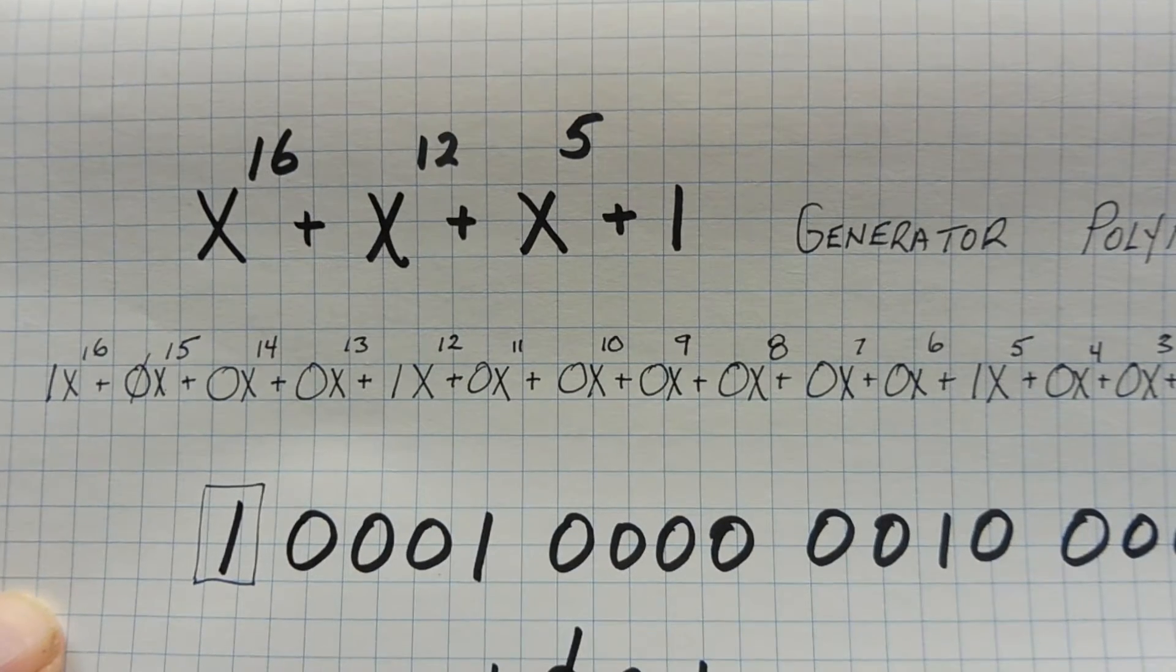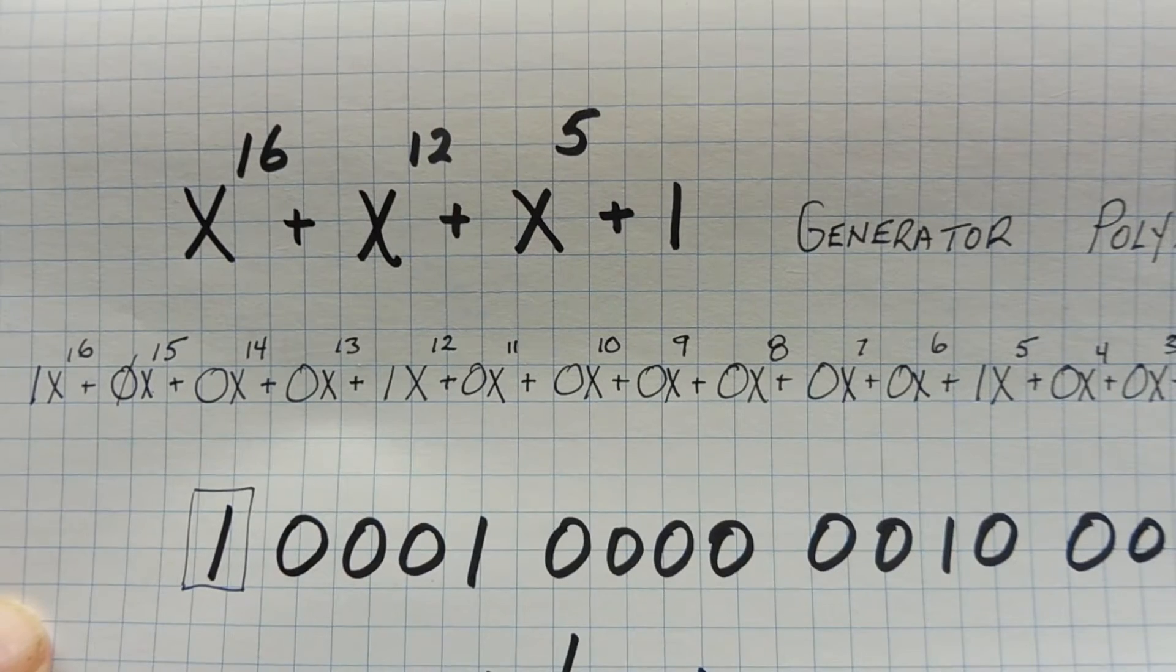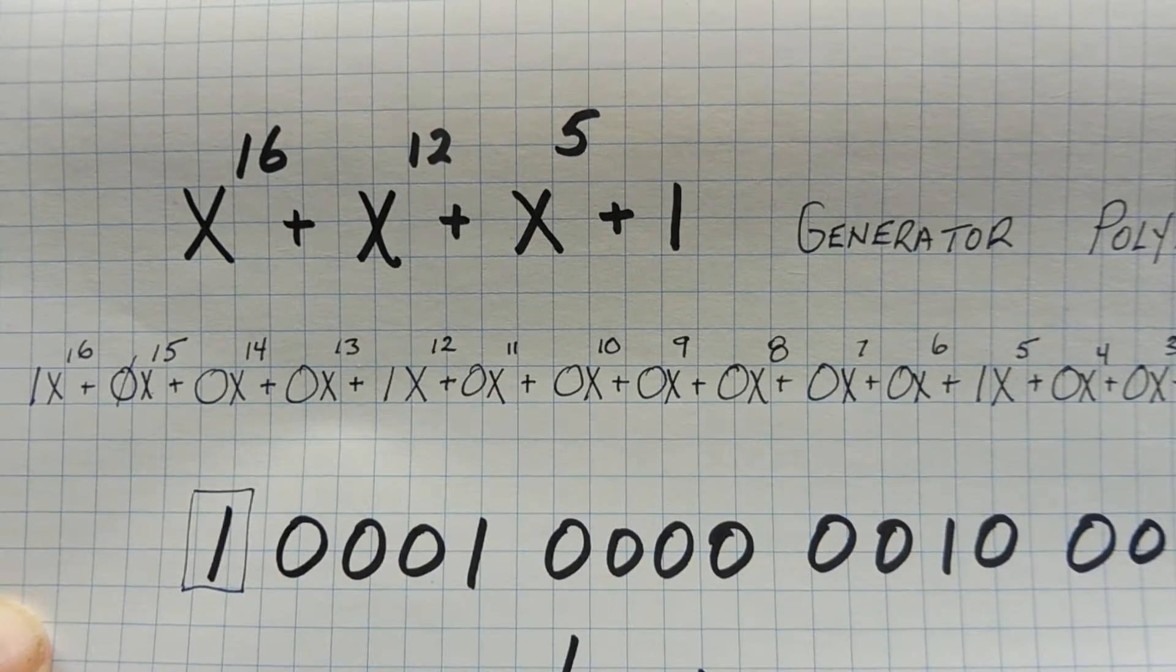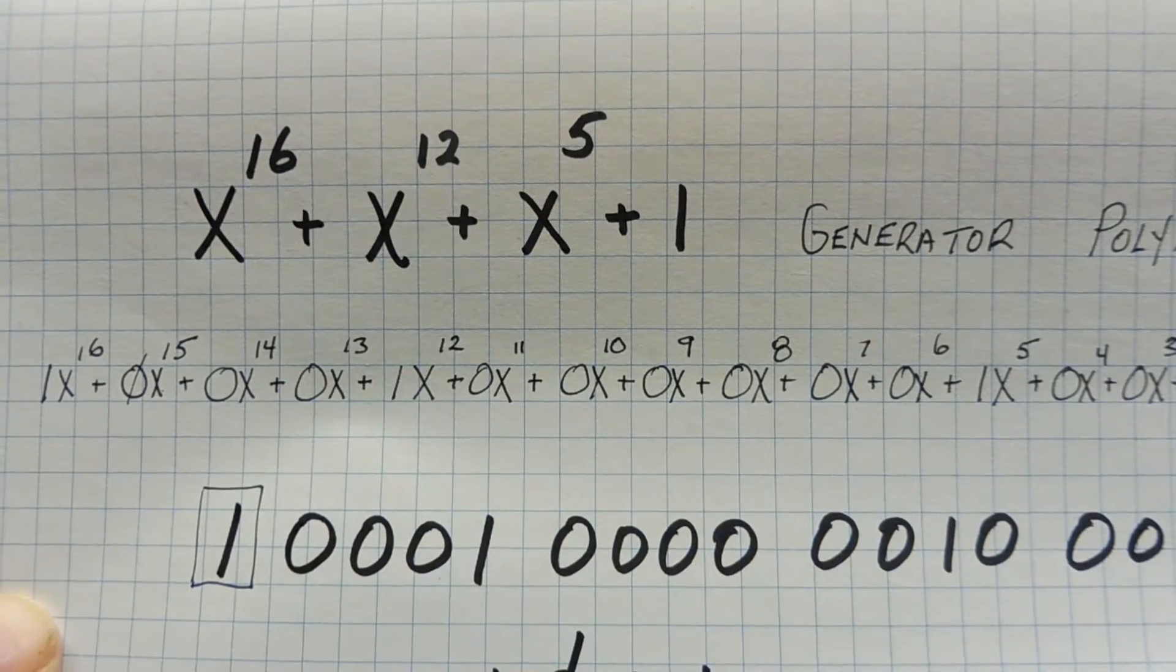So it's X to the 16, plus X to the 12, plus X to the 5, plus 1. And that's actually used in the X modem protocol. And that will generate a 16-bit CRC.